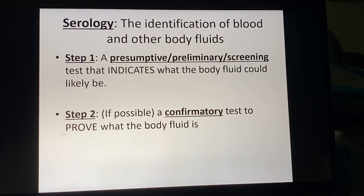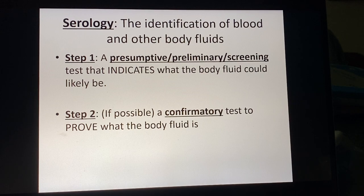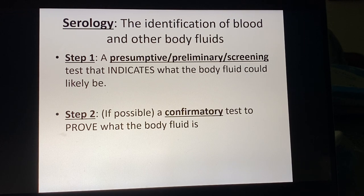You can't do a presumptive test and say this is definitely human blood, but it can indicate that this red-brown stain is likely blood. It doesn't tell you the species, but it does tell you that it's likely blood. A lot of times that is enough to then proceed to DNA.